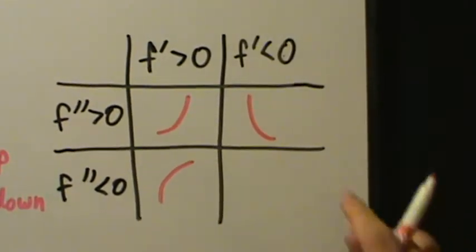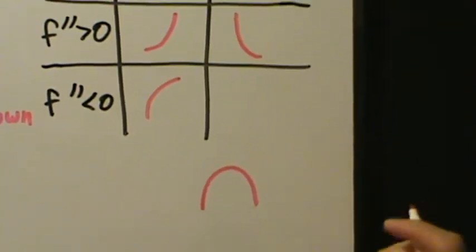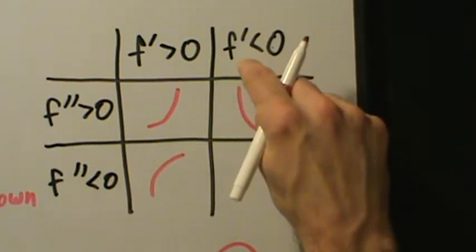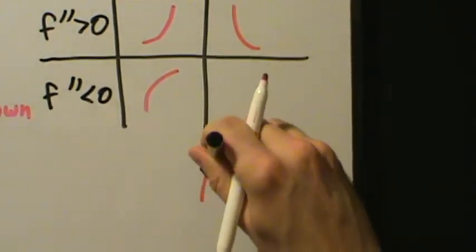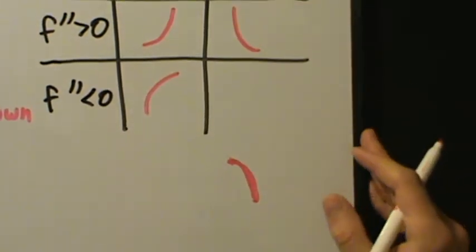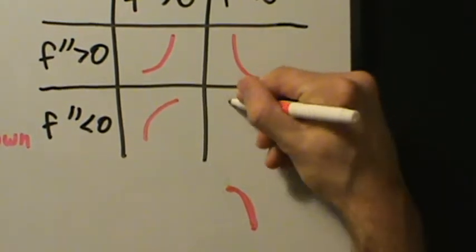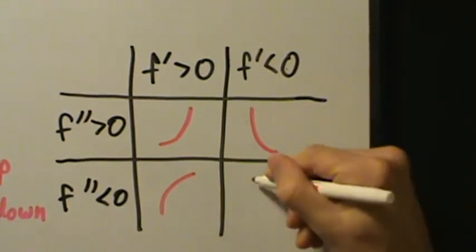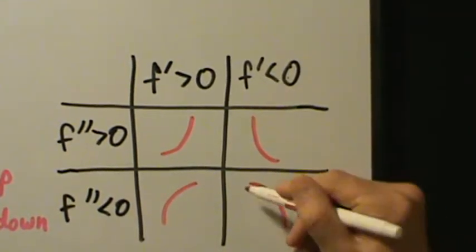The last case: f prime is negative, meaning the function is decreasing, and f double prime is also negative, meaning the function is concave down. Concave down looks like an upside down bowl. We want the decreasing part of that shape, which is on the right side going downward. So decreasing and concave down looks like that piece. f prime negative means f is decreasing; f double prime negative means f is concave down.